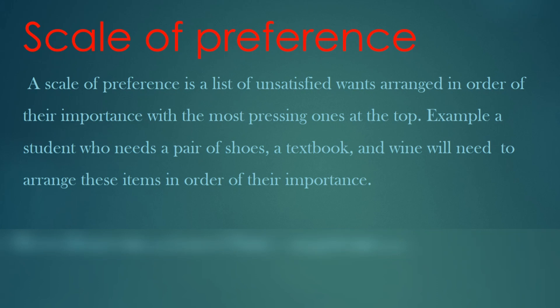A scale of preference is a list of unsatisfied wants arranged in order of their importance, with the most pressing ones at the top. For example, a student who needs a pair of shoes, a textbook, and wine will need to arrange these items in order of their importance.